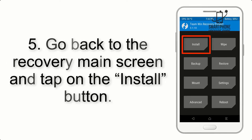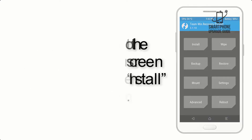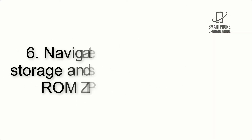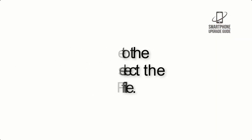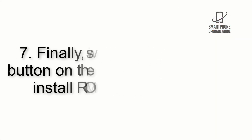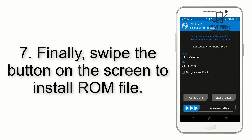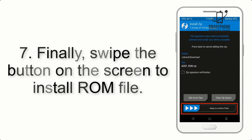Step 5: Go back to the recovery main screen and tap on the Install button. Step 6: Navigate to the storage and select the ROM zip file. Step 7: Finally, swipe the button on the screen to install the ROM file.